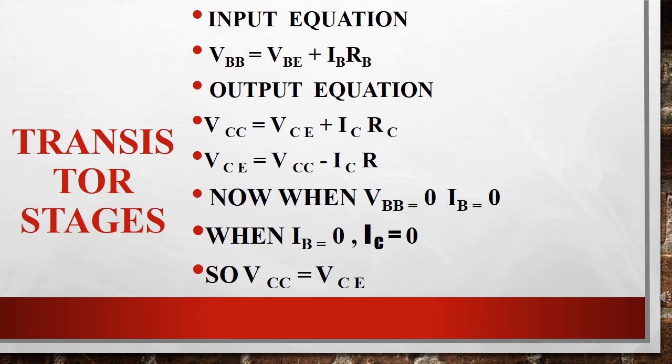When input current IB, that is base current, is 0, how much is collector current? So collector current is also 0, when base current is 0. So how much is the output voltage? Output voltage VCE equals VCC, that is output voltage equals collector to emitter voltage, that is maximum.